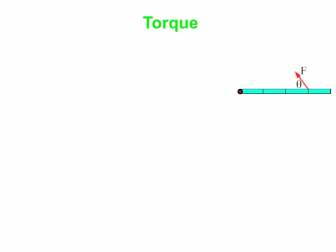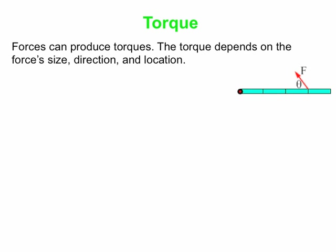We're going to look at a particular case. Here's a rod that can rotate about the left end. There's a little black dot with a red circle — that represents an axis of rotation. We've basically pinned this rod at the left end but we're allowing it to rotate clockwise or counterclockwise. Forces can produce torques; torque depends on force size, direction, and location.